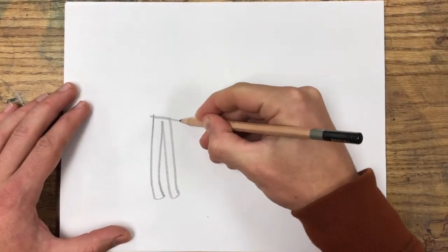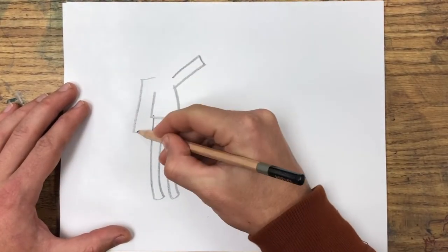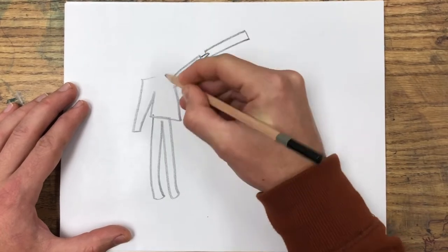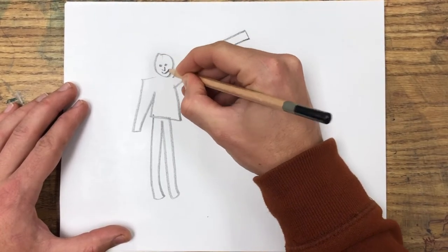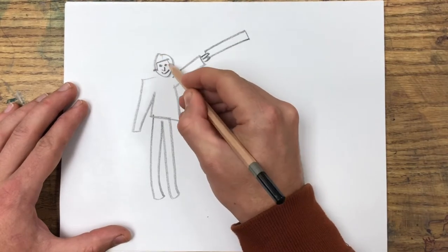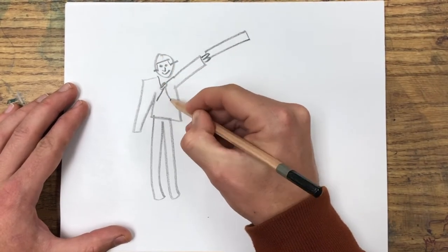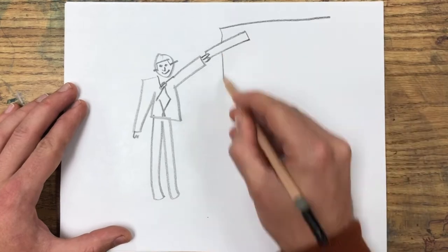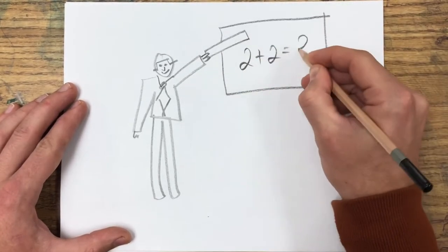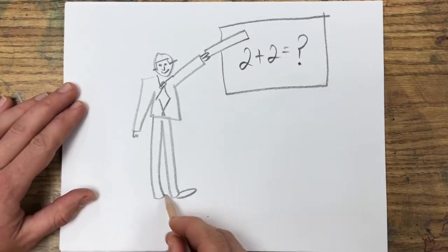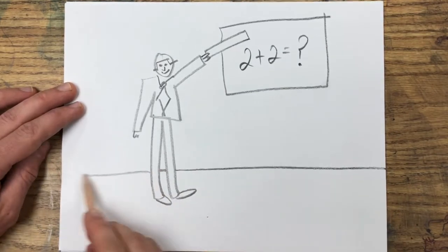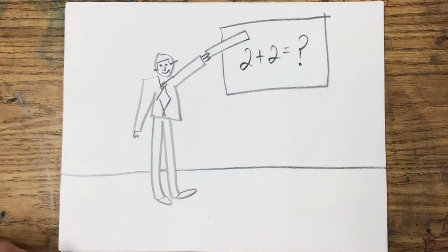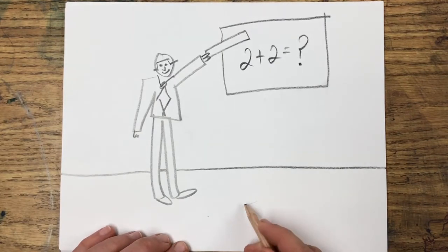Horizon lines don't just separate grass from the sky. They can also be used to separate the floor from the wall. In this drawing I'll draw a teacher, a math teacher, and today his students are working on a very difficult addition problem. But where is the ground? There it is, above and behind his feet. That's how you use a horizon line for an inside scene.